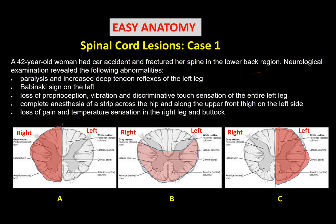The posterior column contains the gracile and cuneate tracts. The gracile tract receives deep sensation — proprioception, vibration, and discriminative touch — from the same side, then ascends until it reaches the medulla, where it crosses to the opposite side. So injury at the spinal cord level causes loss of deep sensation on the same side. Since this is the lumbar region, the gracile tract is affected because it carries sensation from the lower extremity, while the cuneate tract carries sensation from the upper extremity.